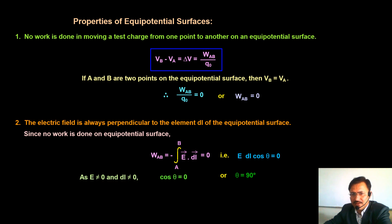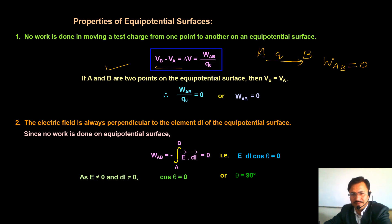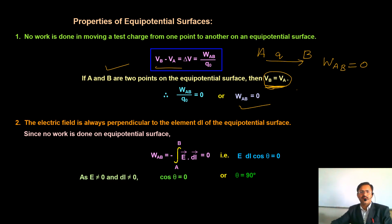The first property: work done to move a charge from point A to B along an equipotential surface is zero (W_AB = 0). From the definition of potential difference, V_B − V_A equals work done from A to B divided by q₀. Since it is an equipotential surface, V_A = V_B, so the potential difference is zero, and hence work done is zero.